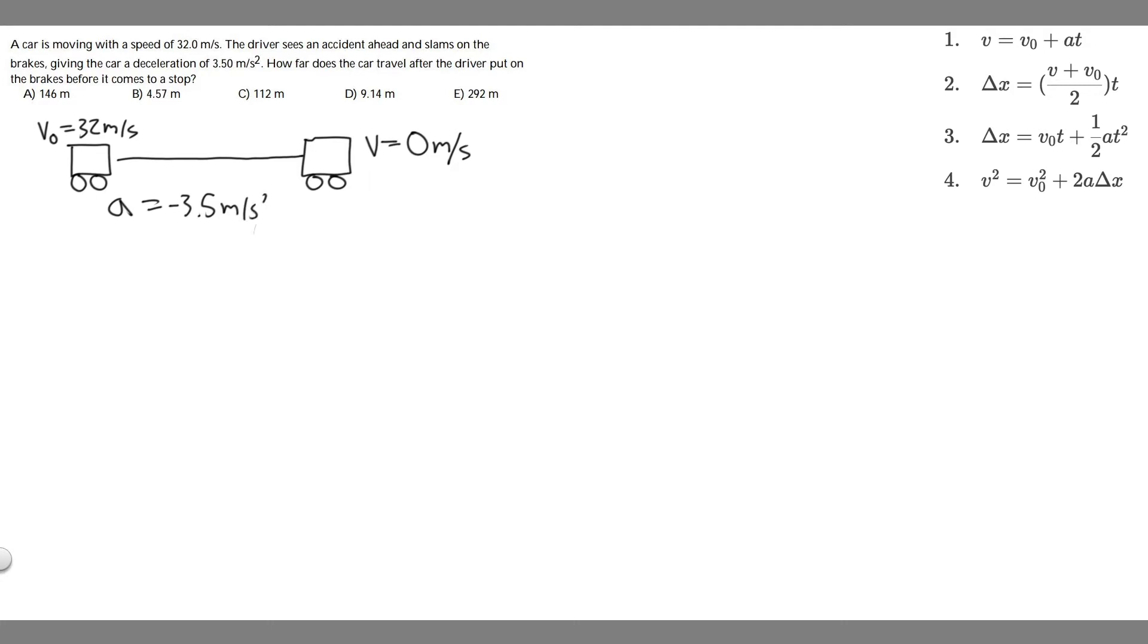So they tell us the deceleration. What that means is we're going to be slowing down at a rate of 3.5 meters per second squared, and it's negative because we're slowing down. Positive means we're going faster, negative means slower.